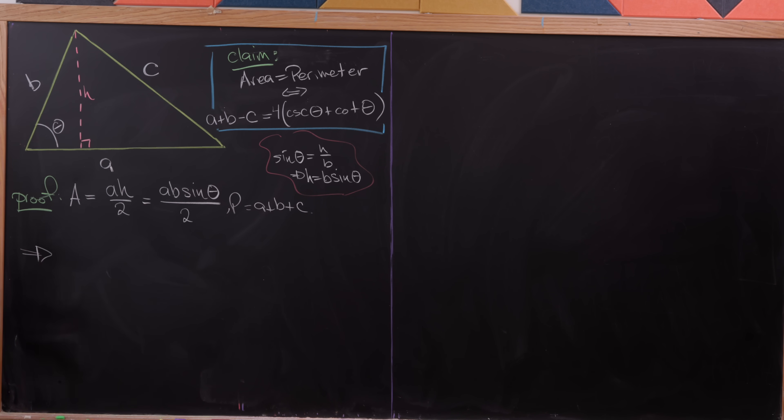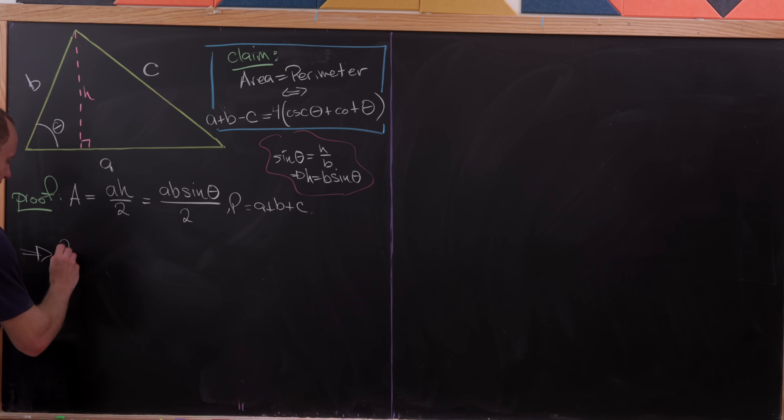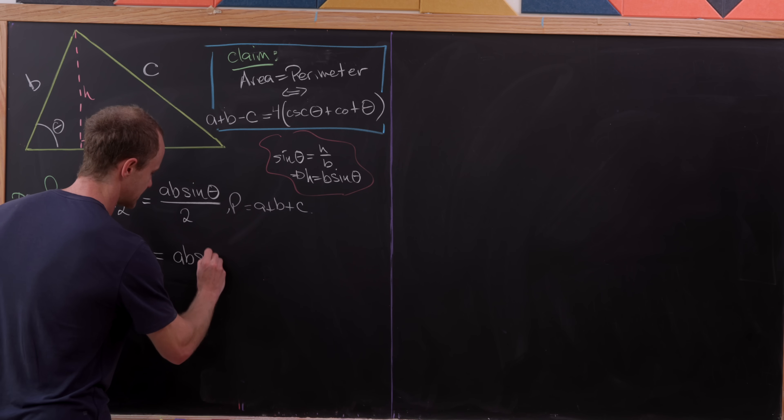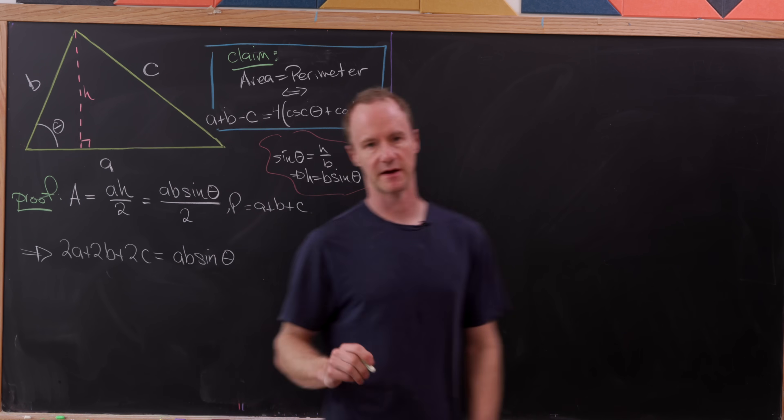So now what we'll do is set the area equal to the perimeter and see what we can get out of that. I'm going to do that along with another step, which is to clear this denominator. So that'll allow me to write this as 2a plus 2b plus 2c equals a times b times the sine of theta.